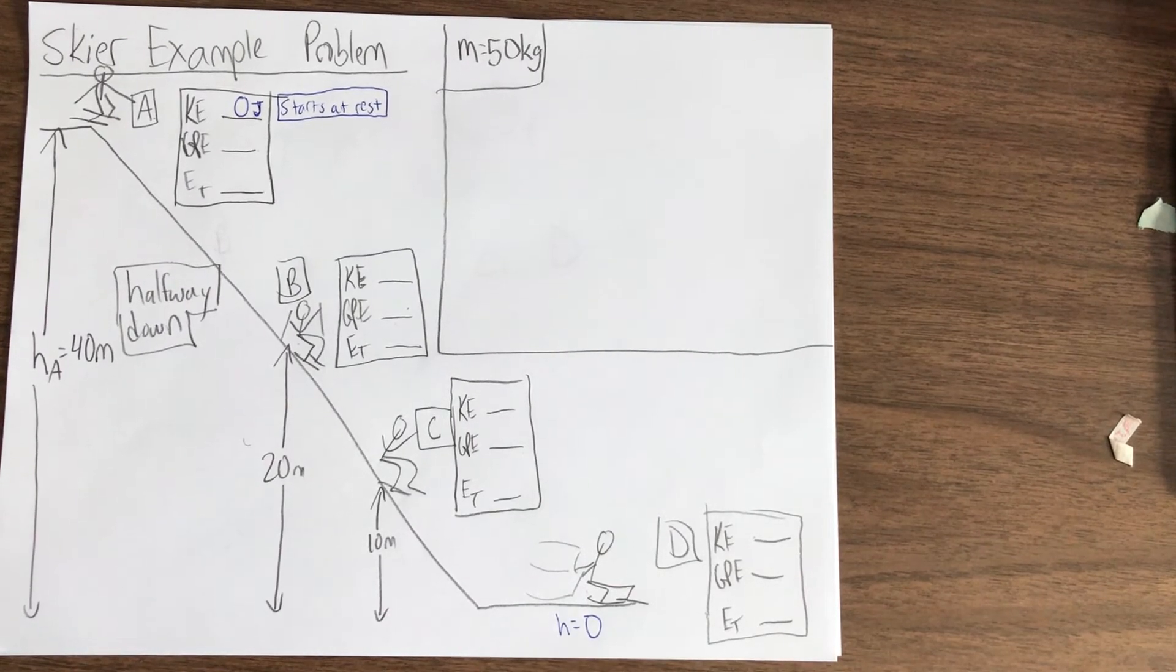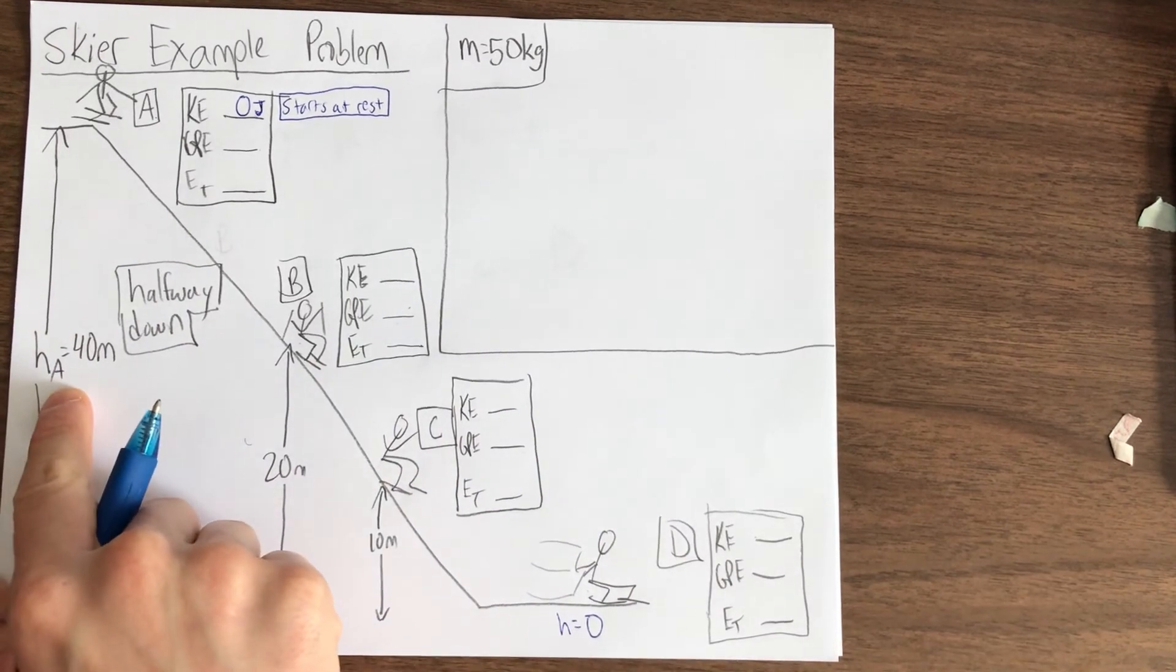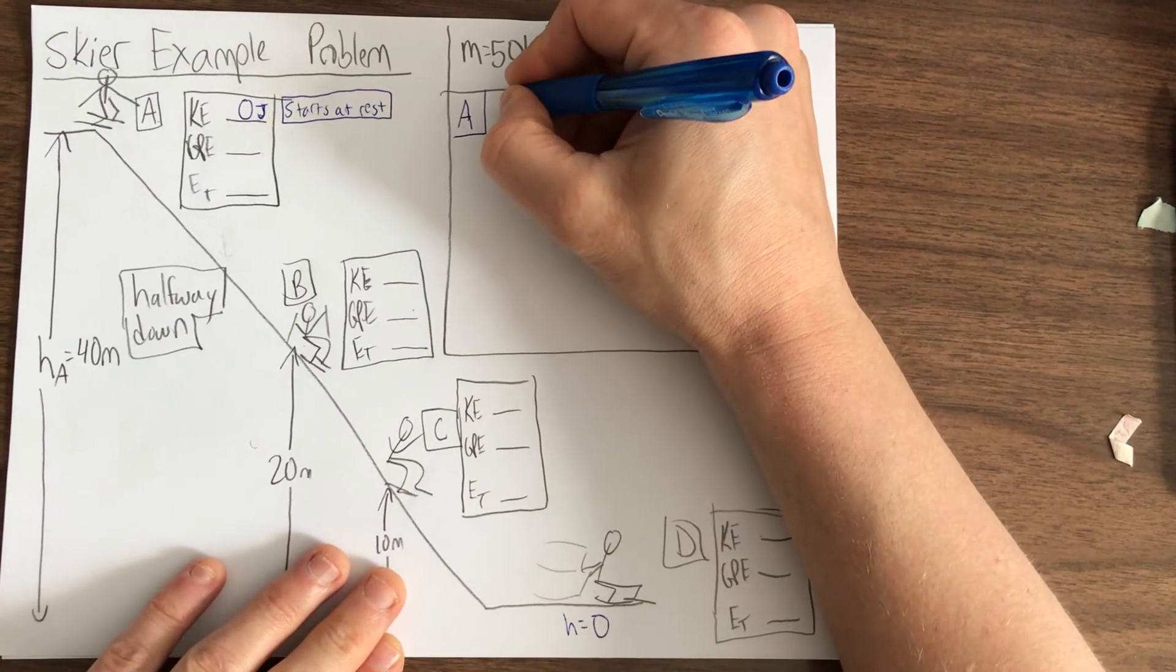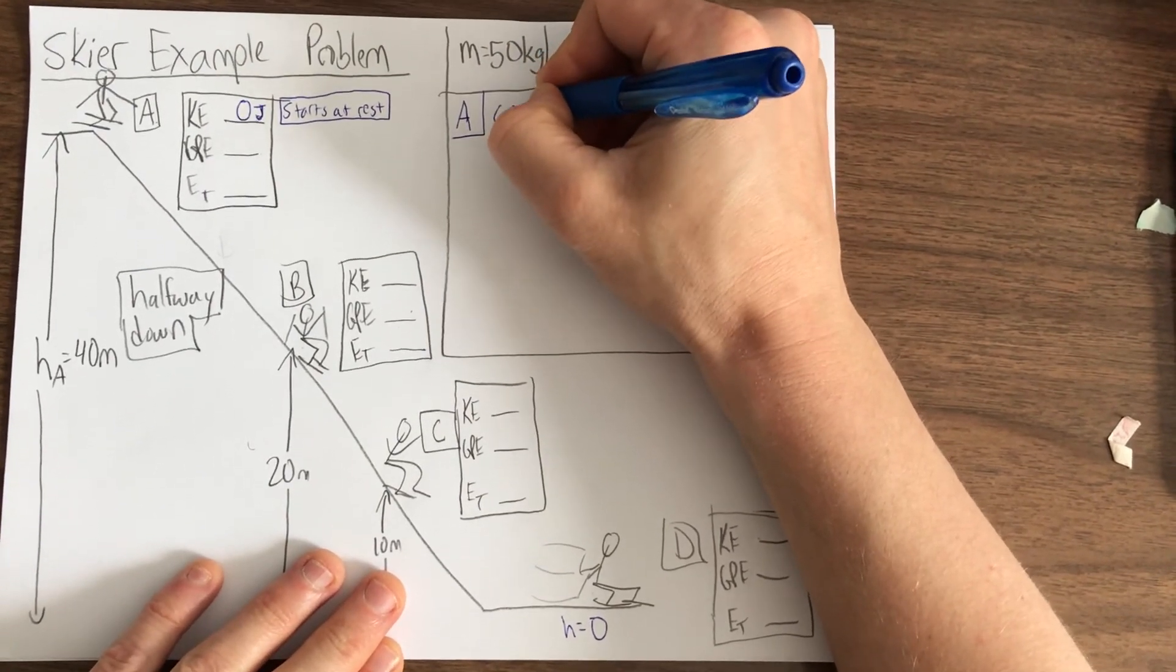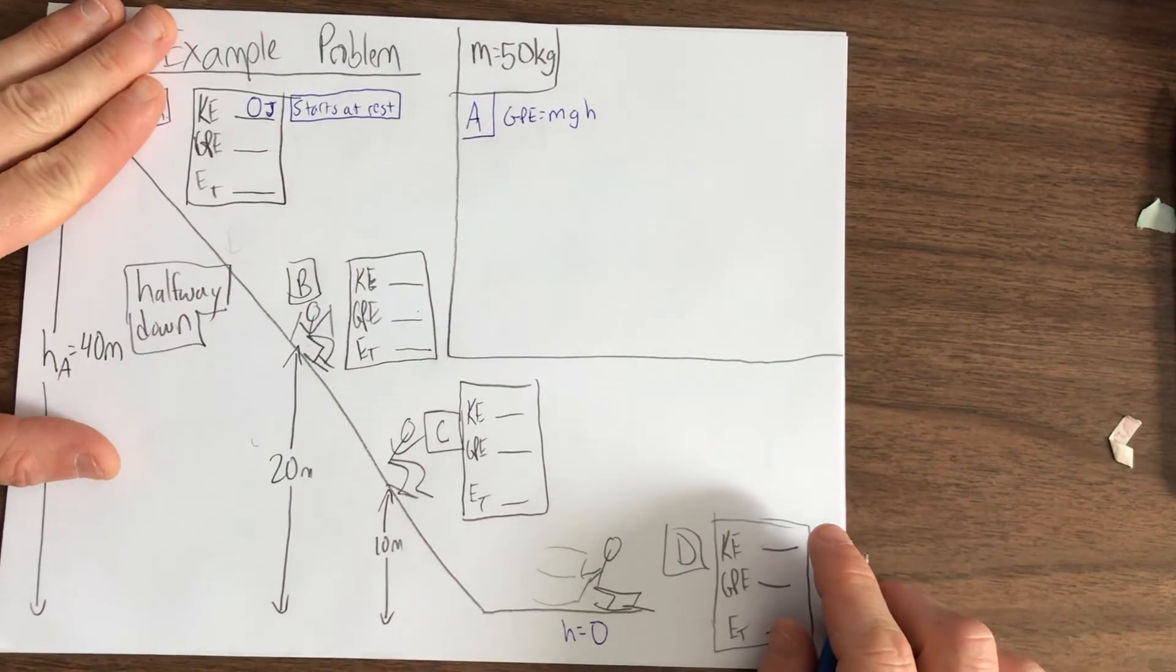Alright, so one other piece of information we're given is height. So if we have height for letter A, we can go ahead and calculate GPE. Mass times gravity times height is our formula.